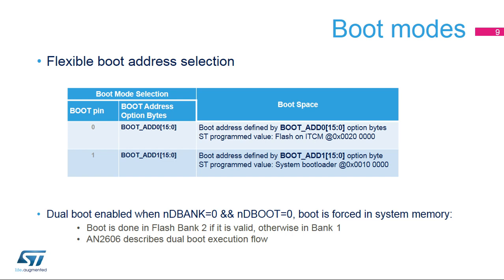The boot ADD0 and boot ADD1 option bytes can be modified after a reset in order to boot from any other boot address after the next reset. If the programmed boot memory address is out of the memory mapped area or in a reserved area, the default boot fetch address is programmed as follows: Boot ADD0 defaults to ITCM flash at 0x00200000, and Boot ADD1 defaults to ITCM RAM at 0x00000000.